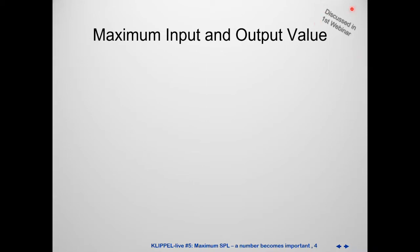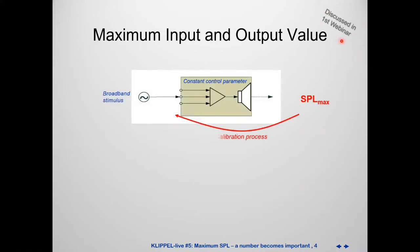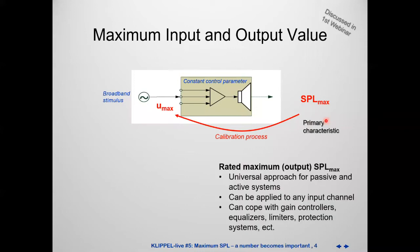This slide was already discussed in the first webinar. The idea is: someone has rated the SPL max, and in the calibration process, we find the right input voltage — here in Europe, in Germany, we use U for that as a maximal input voltage for a certain input channel and a certain set of control parameters in an active system. SPL max is a primary characteristic — it works for passive systems, active systems, any input channel, and can cope with any setting of equalizers and limiters in the system.